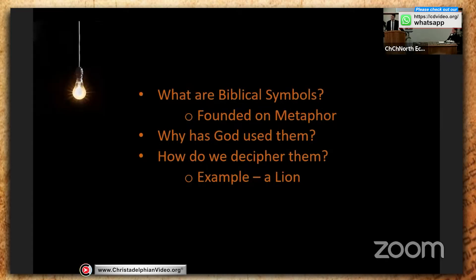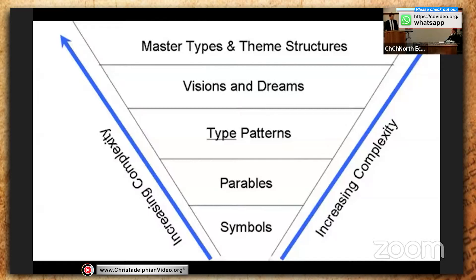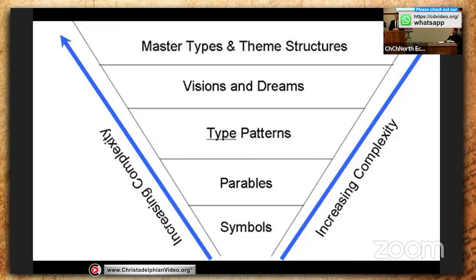When we come to the Bible, symbology and all the varying degrees of it are used extensively. We might start with just the basics at the bottom being symbols, and as we move up this ladder of complexity we come from symbols to parables, to type patterns, to visions and dreams, and then to master types and themed structures. But they're all based on something very simple to begin with. The fact that there are symbols and parables and allegory makes the Bible interesting, and it keeps us wanting to keep looking.